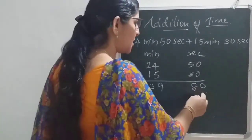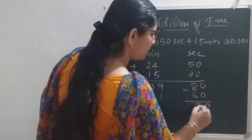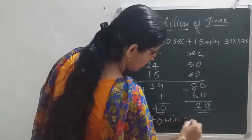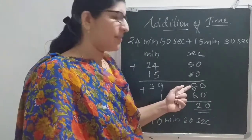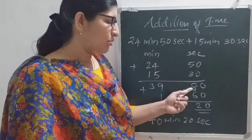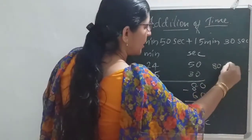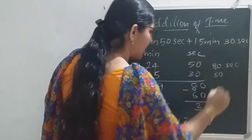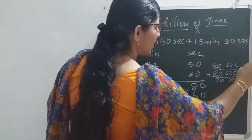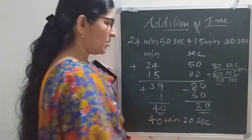60 seconds means 1 minute, so that 1 minute you need to add. You subtract 60 from 80: 80 minus 60 is 20 seconds. So that 60 seconds becomes 1 minute; you add it to the minutes. 39 plus 1 is 40. So the answer is 40 minutes 20 seconds. 80 seconds means 60 seconds plus 20 seconds; 60 seconds is 1 minute and the remaining is 20 seconds.